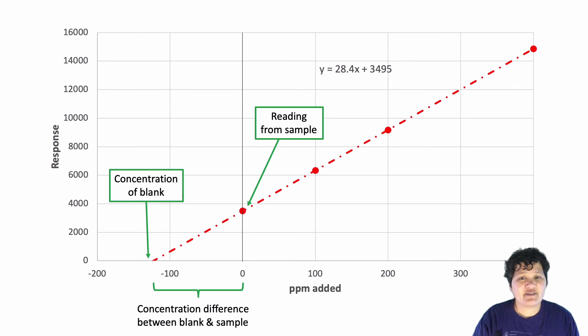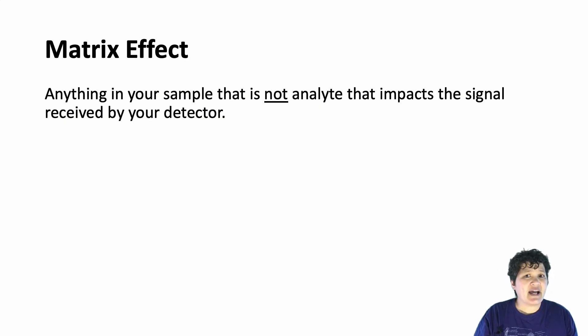Now the process of standard addition is a little harder than using a calibration curve, especially if you have a lot of samples. So why would anyone do it? Basically, we use this in situations where we expect to see matrix effects. This is basically where you have something in your sample, which is not your analyte, but nonetheless affects the signal received by your detector.